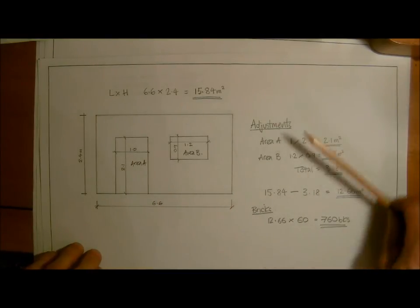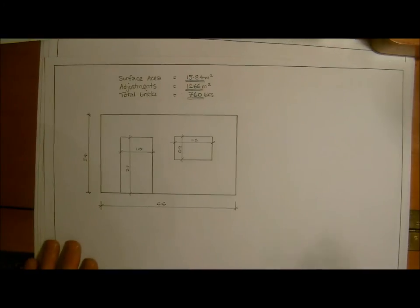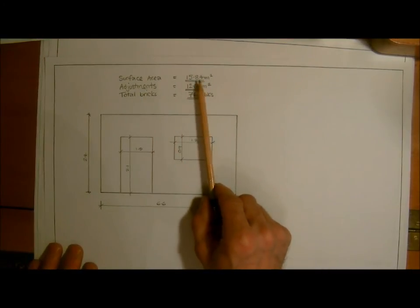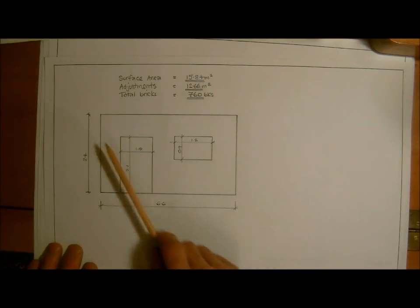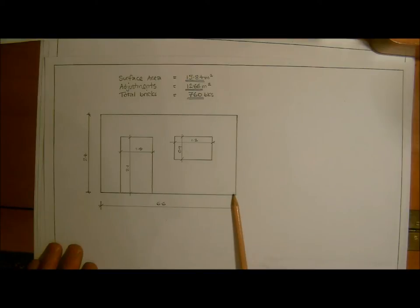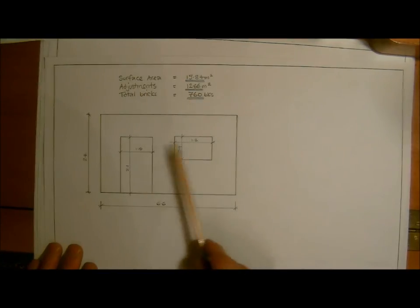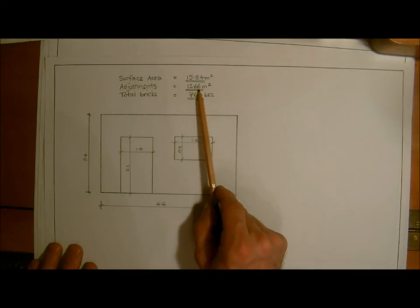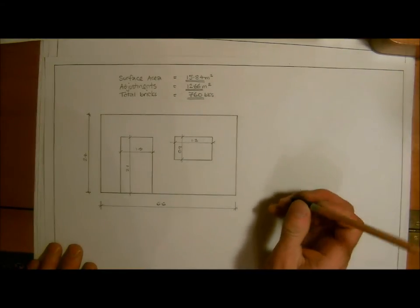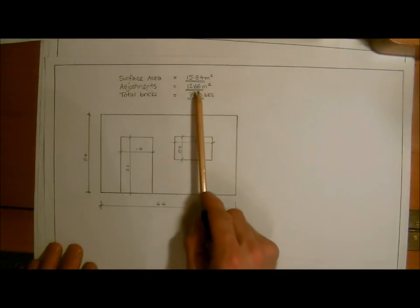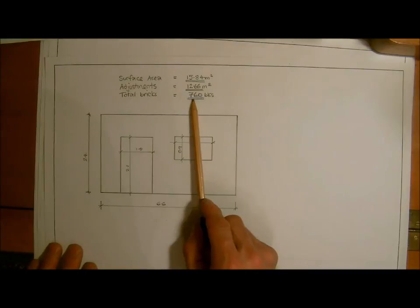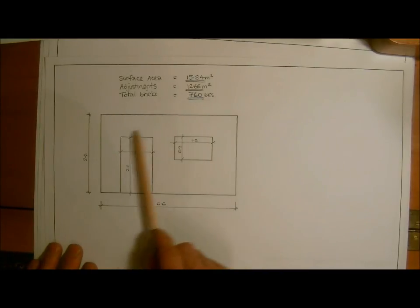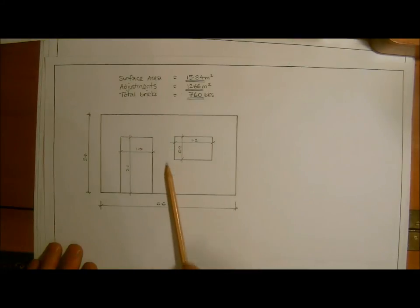We had the wall and we worked the adjustments out. What we found from the last one is the total surface area we had was 15.84, and that was by multiplying the height by the length of the wall. Then we had the adjustments, and when we deducted the adjustments out, the total brickwork needed was 12.66. That was in stretcher bond, so that was 60 bricks per metre squared. That figure multiplied by 60 gave us 760 bricks to be used in that wall, deducting the openings.